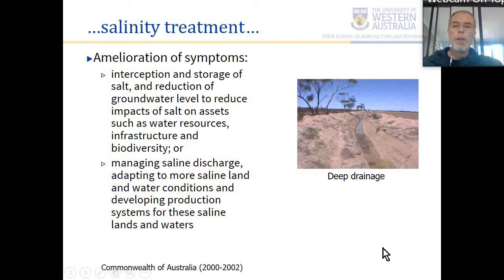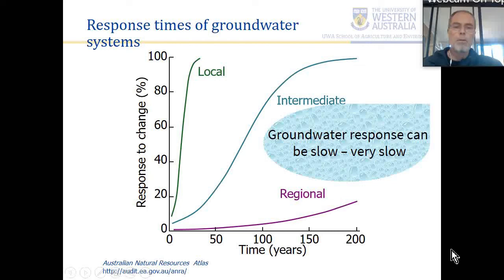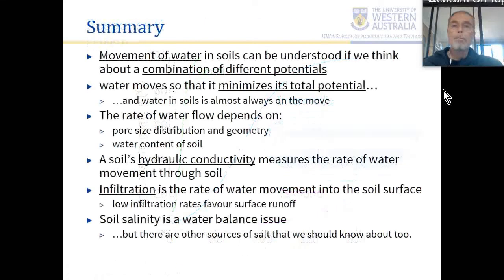Deep drains can capture saline water, though you need to know what to do with it once captured. A key issue is that groundwater response to any change is slow: local groundwater response may be decades, regional groundwater response centuries. If we plant enough trees to fix the problem, we may not even see the response for one to two hundred years.